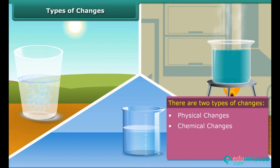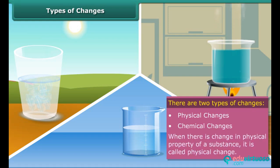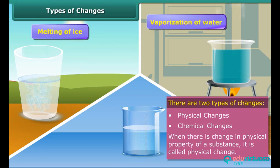In this module you will study physical changes. When there is a change in properties such as shape, size, color, and state of a substance, it is called a physical change. Examples of physical change are melting of ice, vaporization of water, and dissolution of sugar or salt in water.